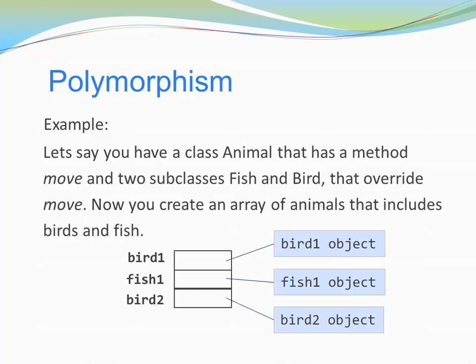Now you create an array of animals that includes birds and fish. In this example, the animal array has three elements: one bird, one fish, and another bird. Notice that bird and fish are both reference types, so the array includes references to the actual objects on the heap. Using a for-each loop to invoke the method move on each array element — if it happens to be a bird, it will print 'flying'; if it happens to be a fish, it will print 'swimming'.